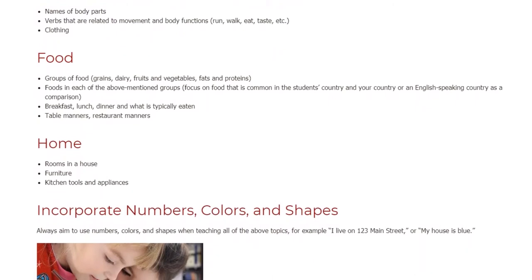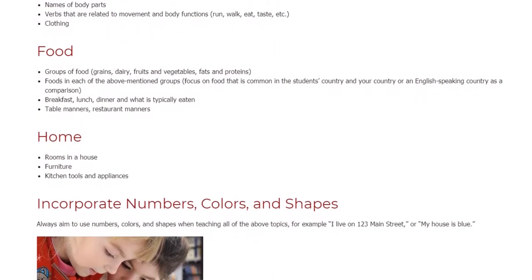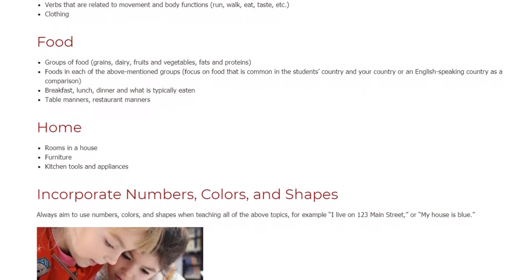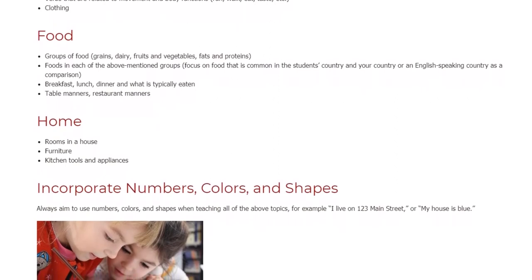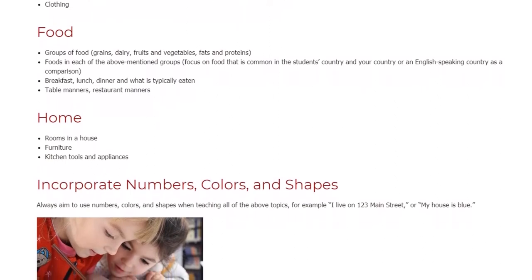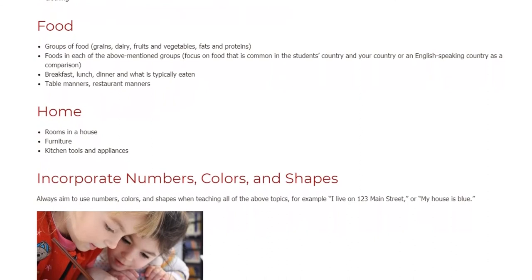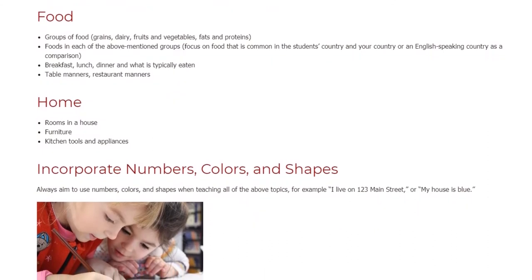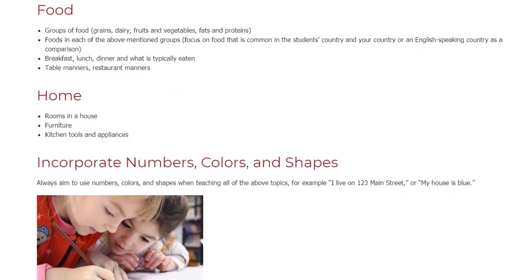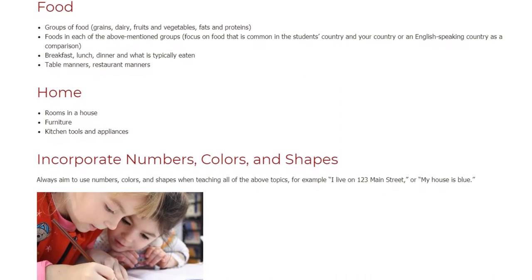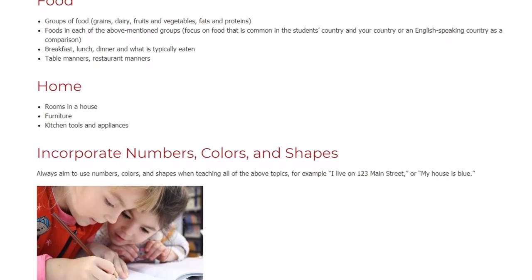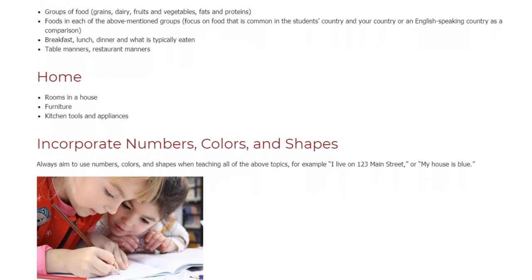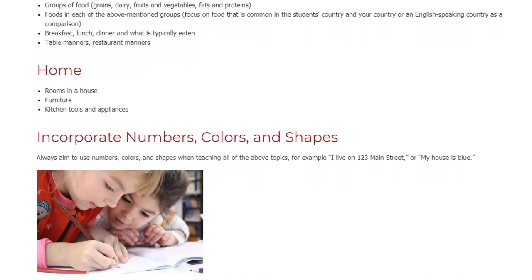Home: rooms in a house, furniture, kitchen tools and appliances. Incorporate numbers, colors, and shapes. Always aim to use numbers, colors, and shapes when teaching all of the above topics — for example, 'I live on 123 Main Street' or 'my house is blue.'